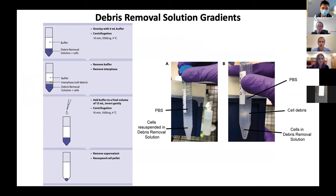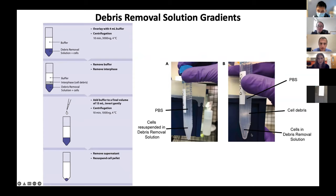You can then aspirate off the top layer and the debris layer, after which you do another PBS wash and centrifugation. On the left you can see the initial layering with a very distinct layer, and after centrifugation you have your PBS layer, a layer of myelin and other cell debris, and your cells in the debris removal solution on the bottom. We have consistently found using live-dead stains that there is about 90 to 95 percent viability of cells following the debris removal solution — a really pure, clean cell population.